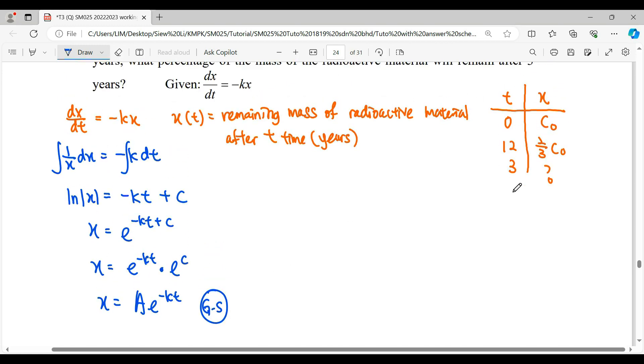Then we try to substitute the value to find out the constant. So the constants in this general solution will be A and k. Starting when we substitute t equals 0, the concentration is initial C₀. So e to the 0 will give you 1. Therefore, we get constant A is the initial concentration C₀. Therefore, our solution will be x equals C₀ times e to the negative kt.